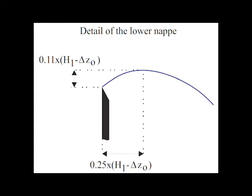For a vertical sharp-crested weir, the lower nappe is deflected upwards immediately downstream of the sharp edge, and the maximum elevation of the lower nappe location can be predicted.